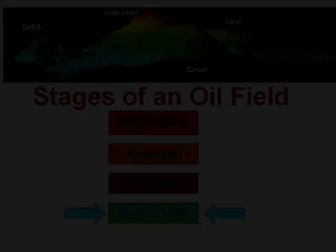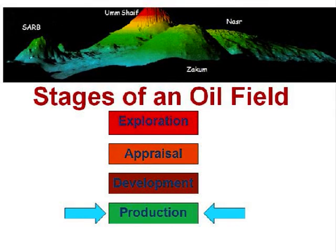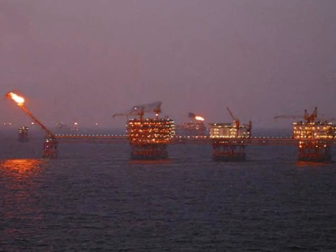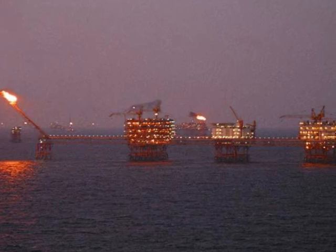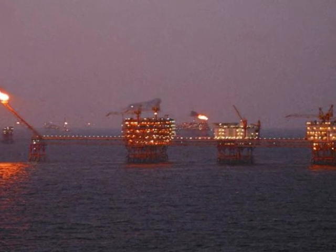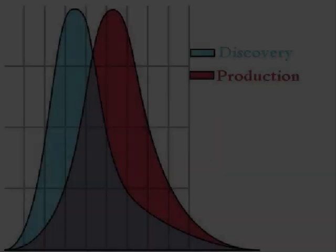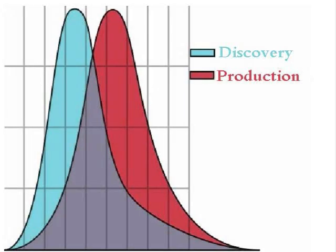When all is in place, the production phase begins. This is where the field starts to produce oil and gas, where it starts to actually make money. In fact, the production stage is the only stage that makes money and must make enough to support the other phases and still make a profit. This stage can last from a few years to decades, depending on the size of the field.